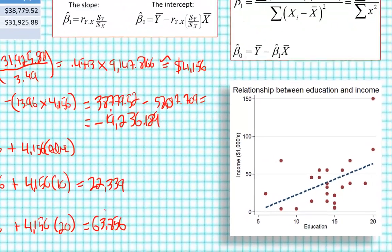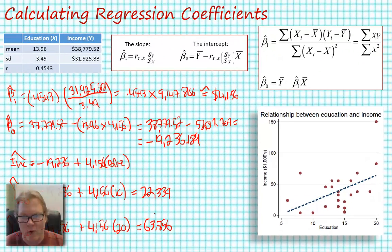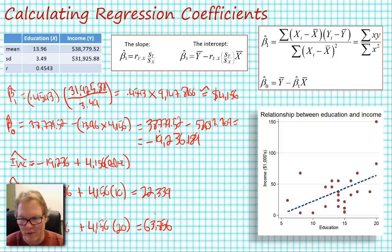So this is a pretty good method, pretty easy to use. You'll certainly see this on one of my tests. I'll give you these five pieces of information and ask you to calculate beta hat sub 1, beta hat sub 0, write out the model as I've done here, and then to interpret this model.